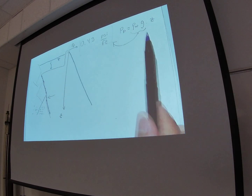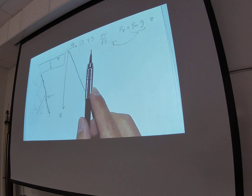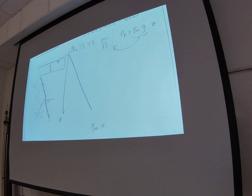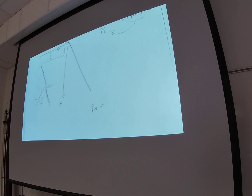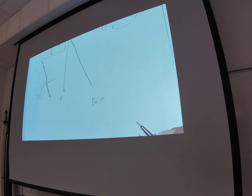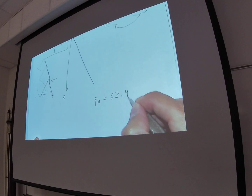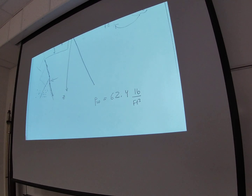The pressure is just going to be the gradient times the depth to the free surface. So let's try to see where this number comes from — 0.43. What is the density of water in pounds per cubic feet? 62.4. So what is this number, guys? 62.4 pounds per cubic foot.